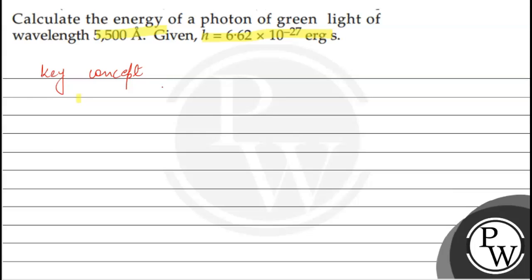We know that energy is given as E is equal to hc upon lambda, where h is Planck's constant, c is velocity of light, and lambda is the wavelength. So the photons having wavelength lambda will have energy E is equal to hc upon lambda.